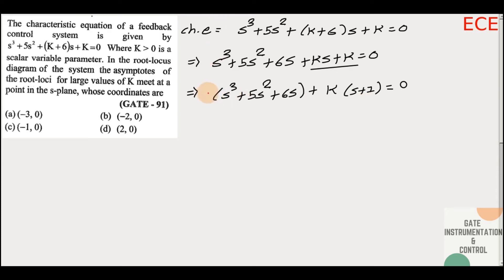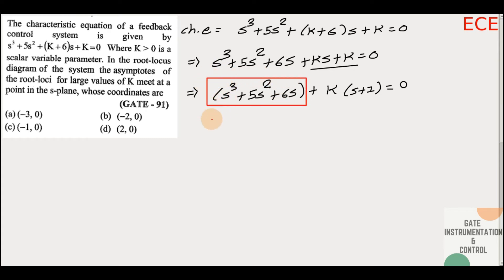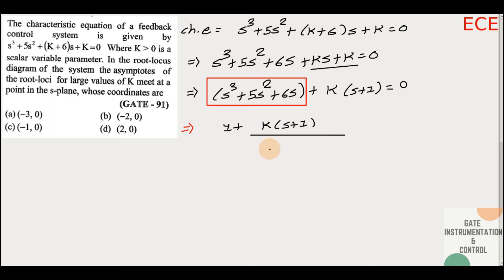The term s³ + 5s² + 6s we can separate out. So we get: 1 + k·(s + 1) / (s³ + 5s² + 6s) = 0.